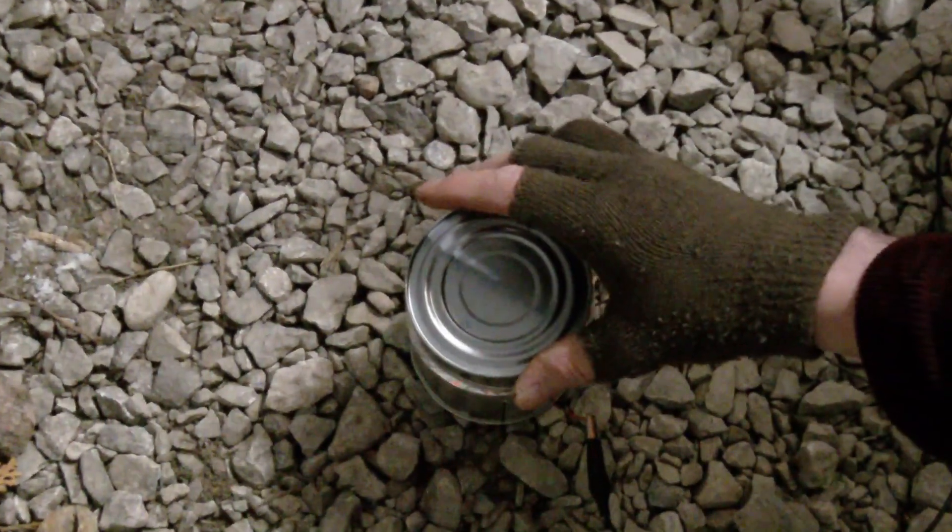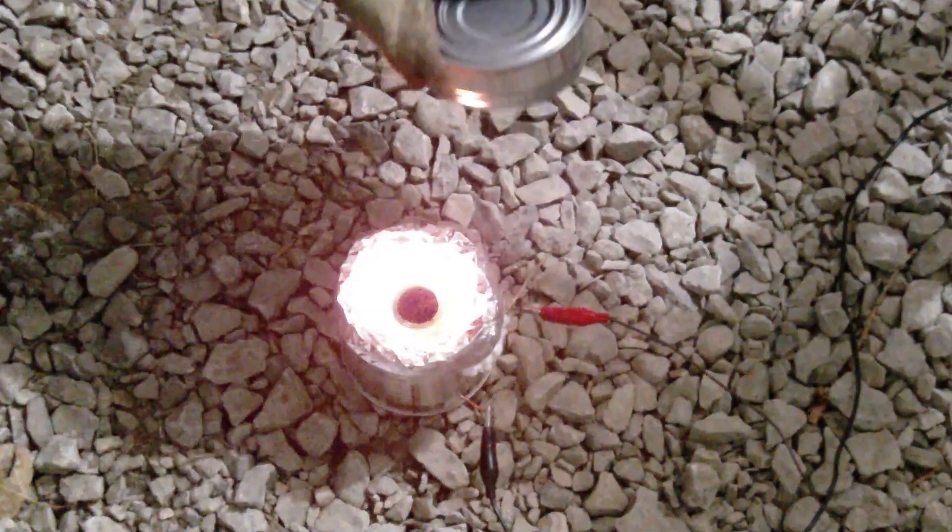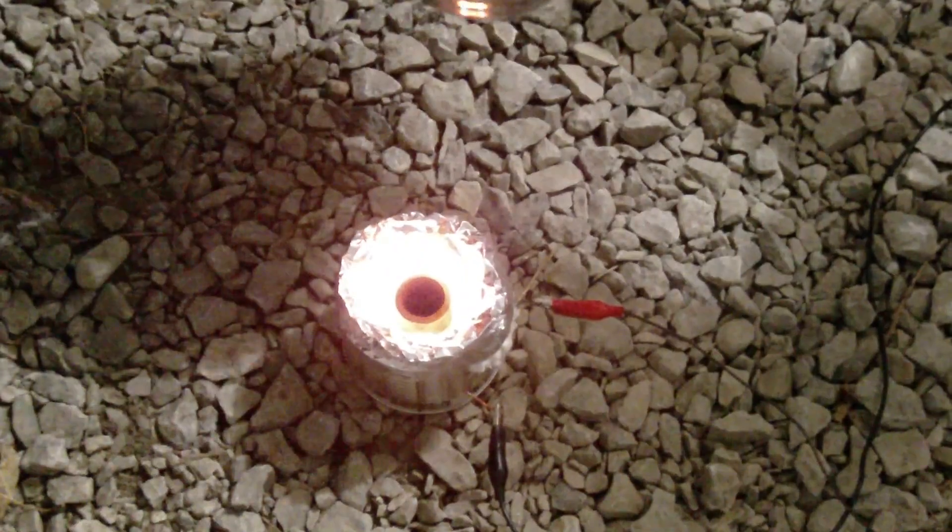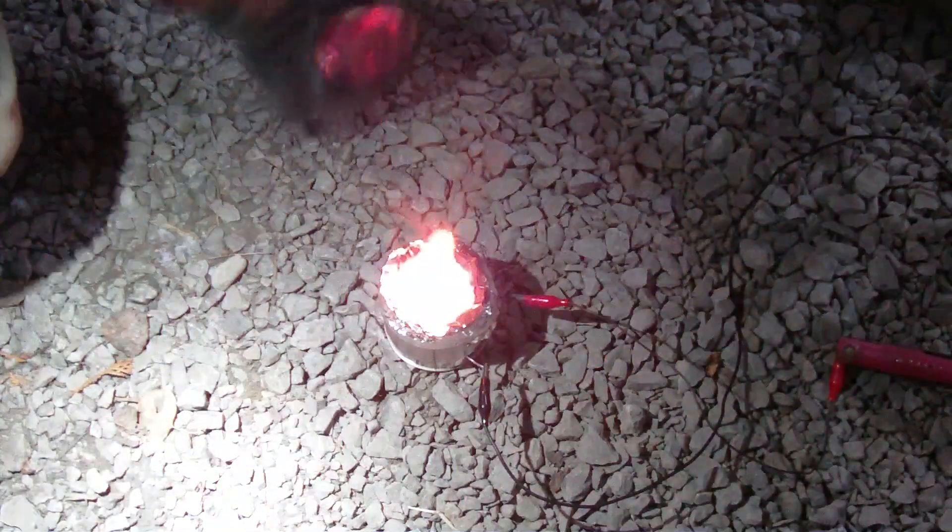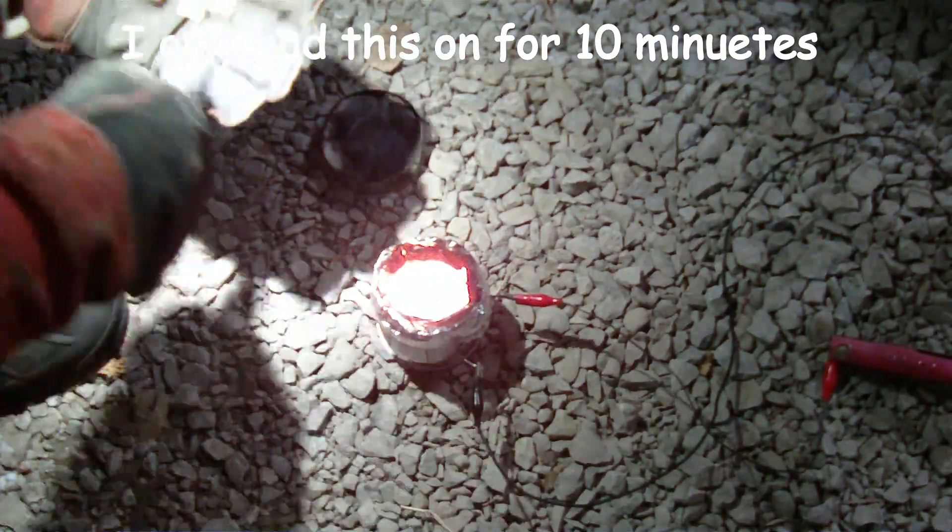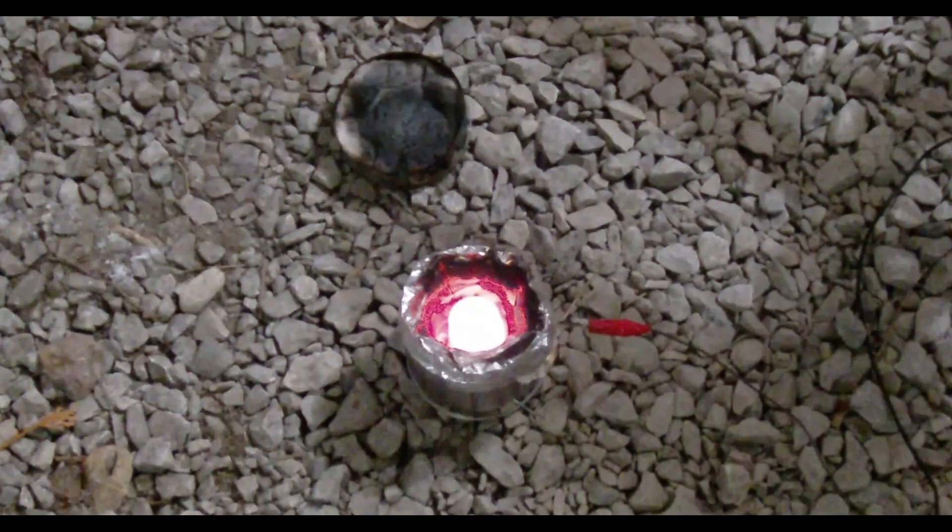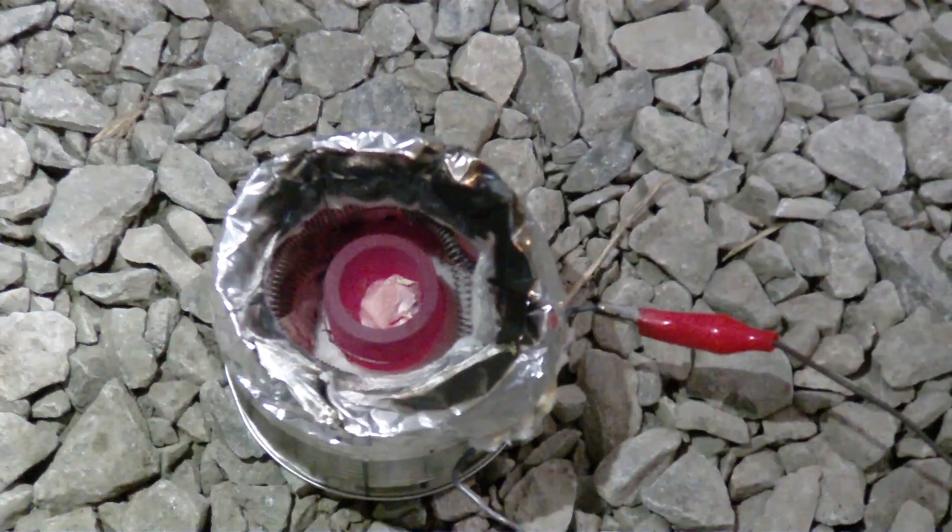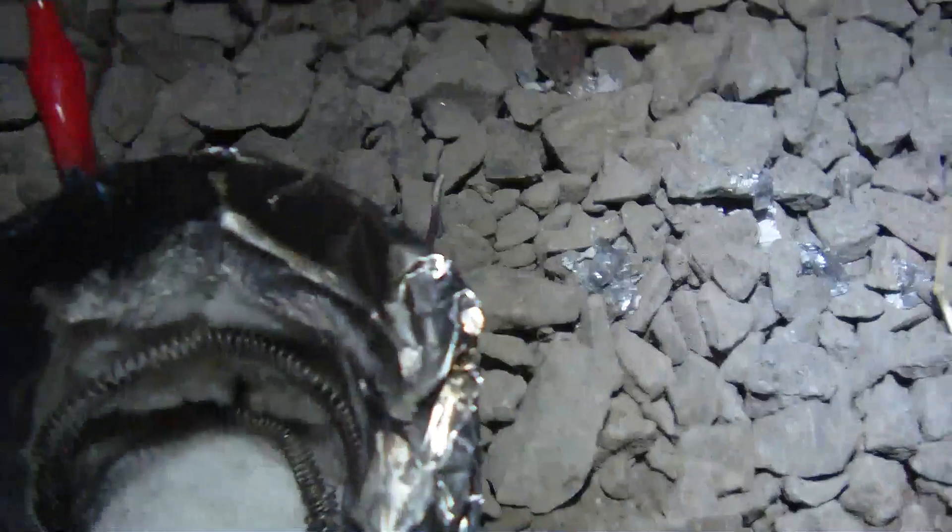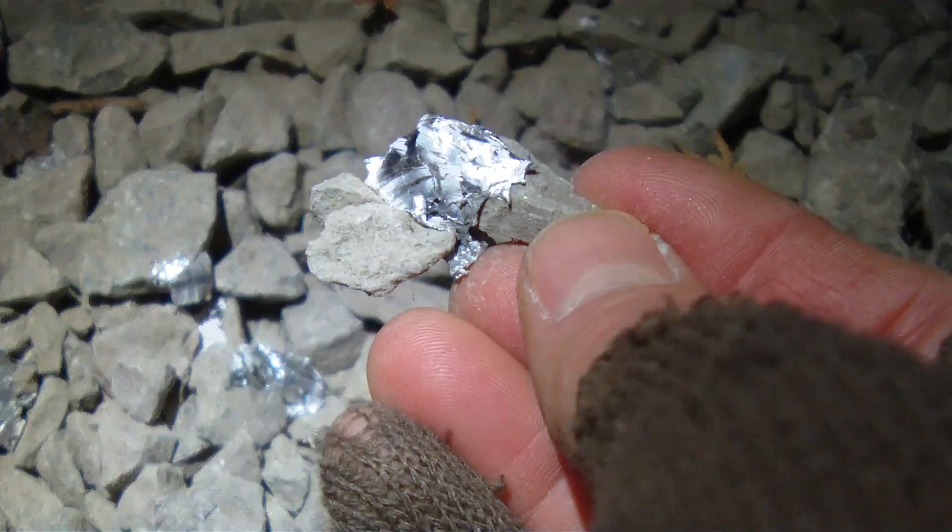Let's find out. I'm running the tin can furnace off those two deep cycle batteries. It's getting pretty hot. Put some aluminum in there, see if we can melt it. All right, other than dropping a little piece of aluminum. So clearly it will melt aluminum, no problem.